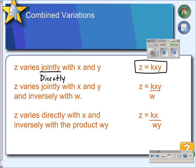Third example, Z varies directly with X, so X is multiplied by K, and inversely with the product YW, so YW is dividing K.